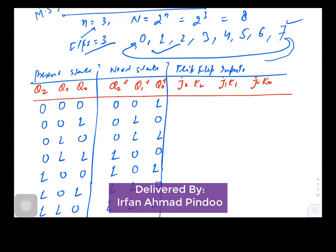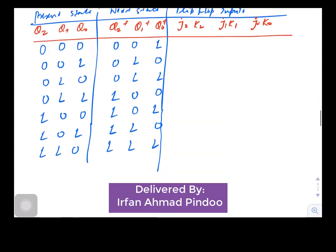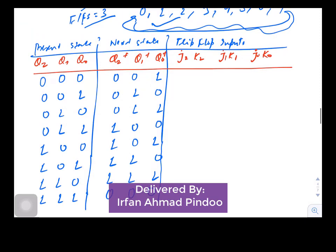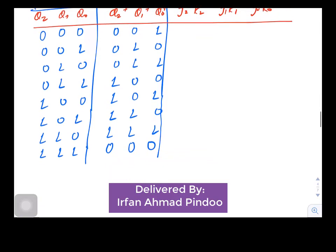From 6 we move to 7, and while the counting is complete, we have to see that after 7 you are moving back to 0. So after 7 we are moving back to 0. This completes my present state and the next state.